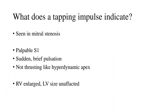Coming to a tapping apical impulse — what does a tapping LV apical impulse indicate? This is seen only in cases of mitral stenosis, and in a country like India we do have a lot of rheumatic mitral stenosis cases. This is not because of the left ventricle per se — the tapping part of this impulse is actually due to a palpable first heart sound. It is a sudden, brief pulsation, not thrusting like a hyperdynamic apex. Under the palpating finger you can feel a palpable heart sound — a touch-and-go phenomenon. In mitral stenosis it is not the LV but the right ventricle which is enlarged; the left ventricular size is unaffected and does not contribute to this tapping impulse. A palpable S1 is what contributes to this particular tapping impulse.